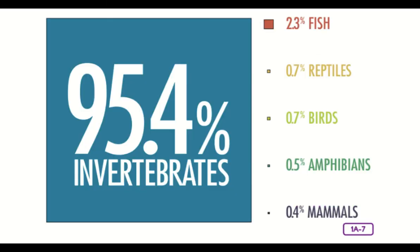Now that you know that a vertebrate is an animal with a backbone, what do you think an invertebrate is? Yes, that's correct. An invertebrate is an animal with no backbone. A little more than 95% of all animals on Earth are invertebrates. Think about it — more than 95% of all the species of animals on Earth are invertebrates. That's a lot, and most of them are fairly small. Fewer than 5% of all animal species are vertebrates. That means you and I and all vertebrates belong to a very small percentage of all the animals on Earth. Mammals, that includes all humans, are literally just a speck.